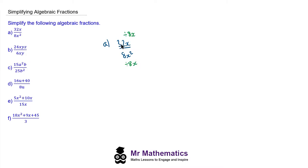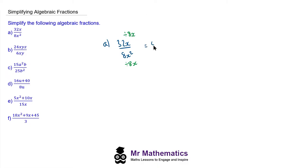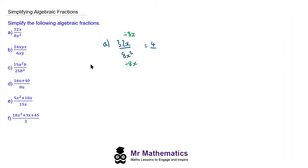Now we can divide 32 by 8 to make 4, and the x divided by x will cancel to make 1, so we're left with 4 on our numerator. For the denominator, 8 divided by 8 makes 1, and x squared, which is x multiplied by x, divided by x simplifies to just one x term. So the simplified fraction is 4 over x.